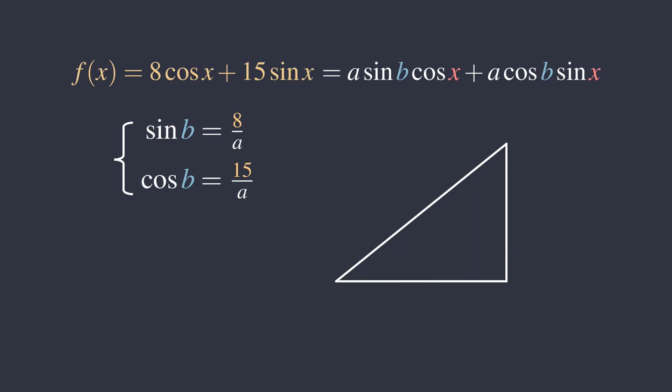Using these two equations to label a right triangle, if this is angle b, then the opposite side is 8, and the adjacent side is 15. Using the Pythagorean theorem, the hypotenuse a must be 17.